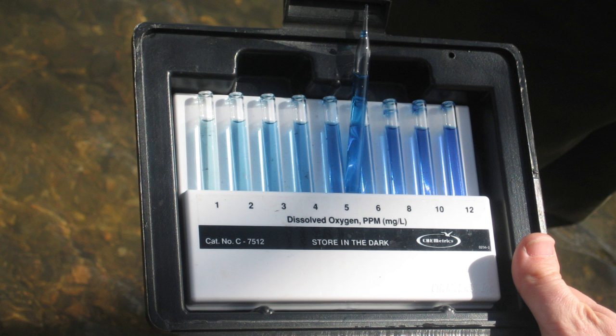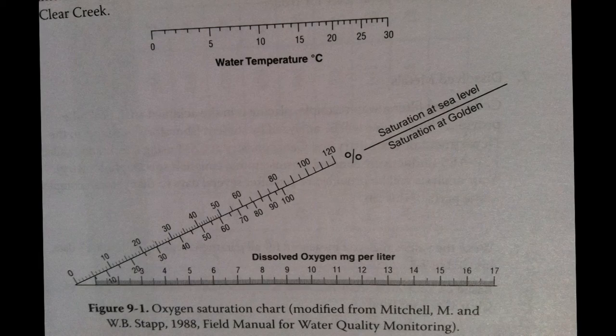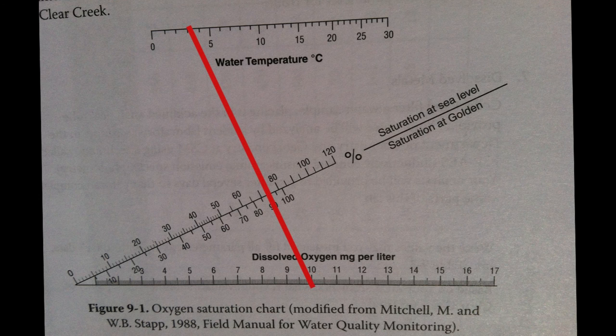Water can be saturated with DO, but the total amount of DO at saturation is temperature dependent, as oxygen dissolves better in cold water than in warm water. Using the previously recorded water temperature and the just-measured DO in milligrams per liter, use the chart in your text to connect those two data points. Where your line crosses the saturation line, that is the saturation level of oxygen for the creek today.